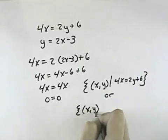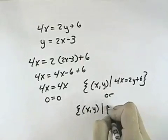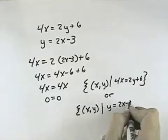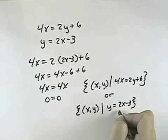Or I could instead express it as all (x, y) such that y equals 2x minus 3. In other words, all points that make that equation true.